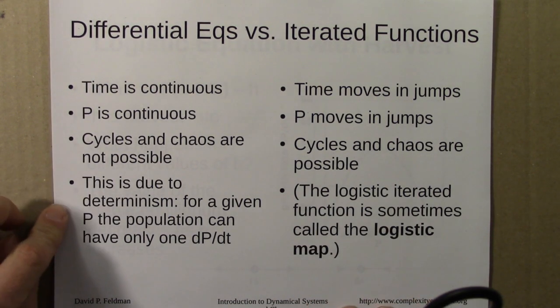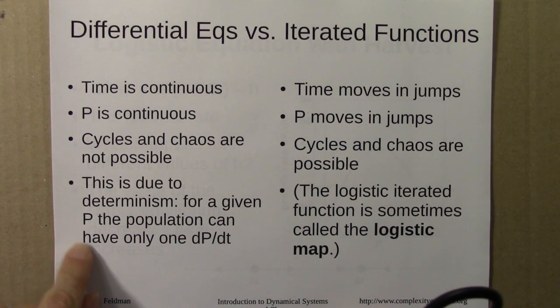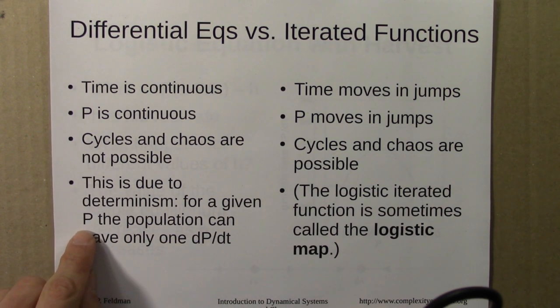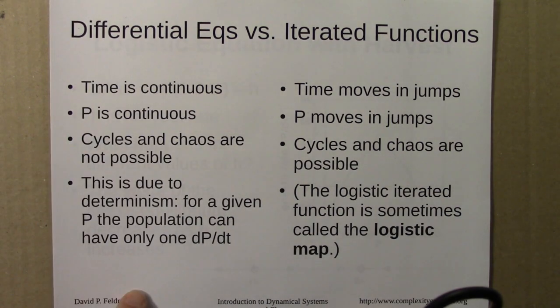This is due to determinism: for a given P, the population can have only one derivative, only one rate of change. It can't cycle around, go up and down for the same P-value. It has to either go up or down. So P can only increase to a fixed point, decrease to a fixed point, or tend towards plus or minus infinity. The range of behaviors is a little dull—we don't see chaos or even cycles.